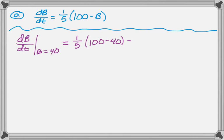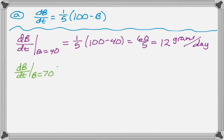So we plug in 40 for B, and simplify, and we get 12 grams per day. So that's when the weight is 40, and then we're going to do the same thing when the weight is 70. And so we'll substitute, and we'll simplify, and then we can see that this is 6.